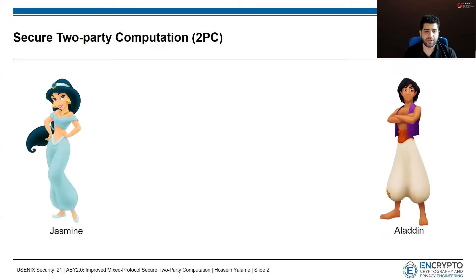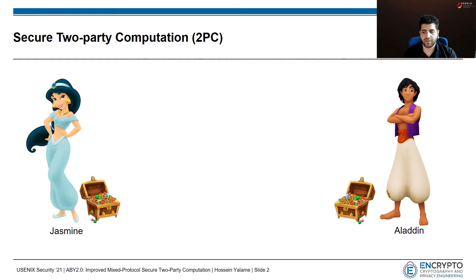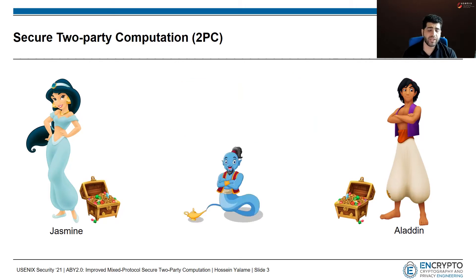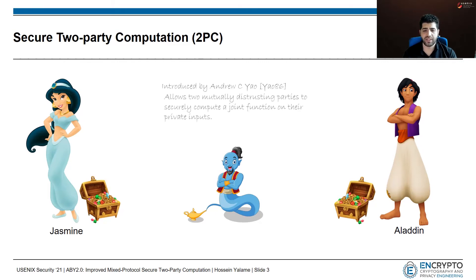In the problem of Secure Two-Party Computation, there are two parties, say Yasmine and Aladdin. As an example, let's assume that both have a box of diamonds and the goal is to compute the number of diamonds that both have with the same color. The privacy requirement is that the parties should not learn anything beyond this information. Here, the magic is 2PC, or Secure Two-Party Computation. 2PC allows two mutually distrusting parties to compute a joint function on their private inputs without revealing any information.